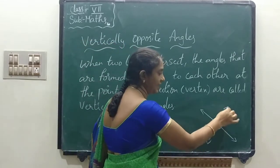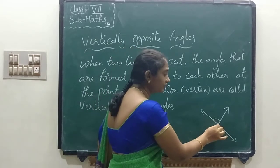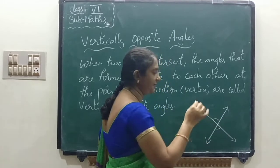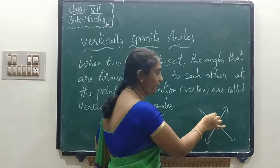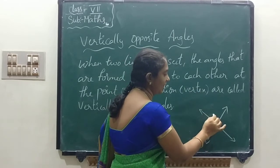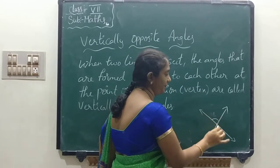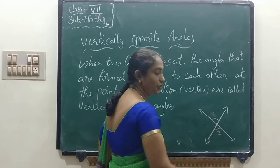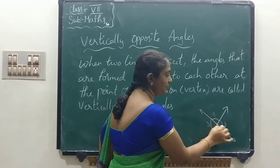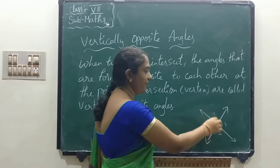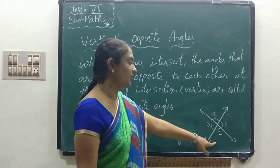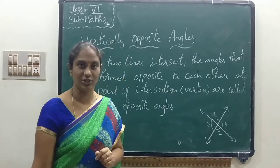We are taking one line and here one line. By taking two lines, we are forming angles at the same vertex. If you take angle 1 here and angle 2 here, these two are opposite angles. If you take angle 3 and angle 4, they are vertical opposite angles. So for angle 1 what is the opposite angle? Angle 2. For angle 3 what is the opposite angle? Angle 4. Angles 1 and 2 are vertically opposite angles; angles 3 and 4 are vertically opposite angles.